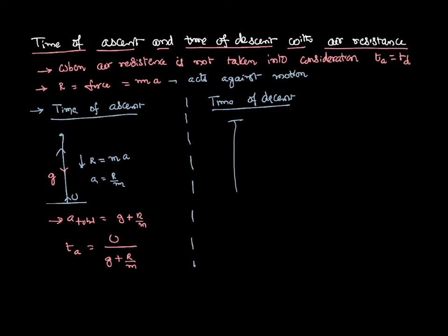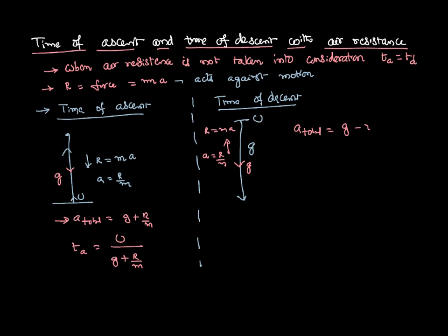Now let us talk about time of descent. The body is coming down with initial velocity zero. Acceleration due to gravity acts in the downward direction. As the body is coming down, the air resistance acts in the upward direction, equal to MA, so it experiences an acceleration R by M upward. But G acts downward, so the effective acceleration is G minus R by M. Therefore, time of descent equals U divided by G minus R by M.